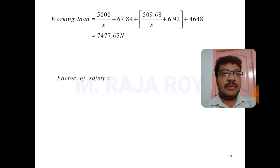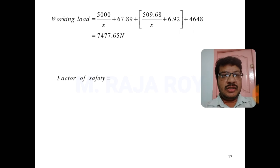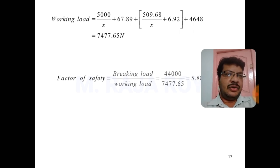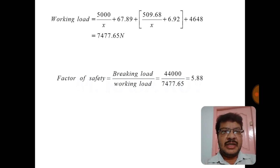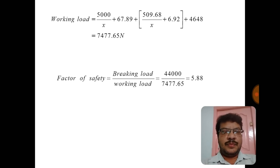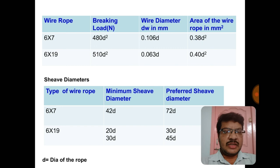The total working load now equals the sum of the previous three loads plus the bending load P_B. Factor of safety equals braking load (44,000 N) divided by this total working load. The factor of safety is reduced to approximately 5.8, roughly 6, compared to the original 10 — because of the extra bending load. These two tables must be remembered to solve problems on wire ropes. Thanks for watching; please subscribe to the channel.